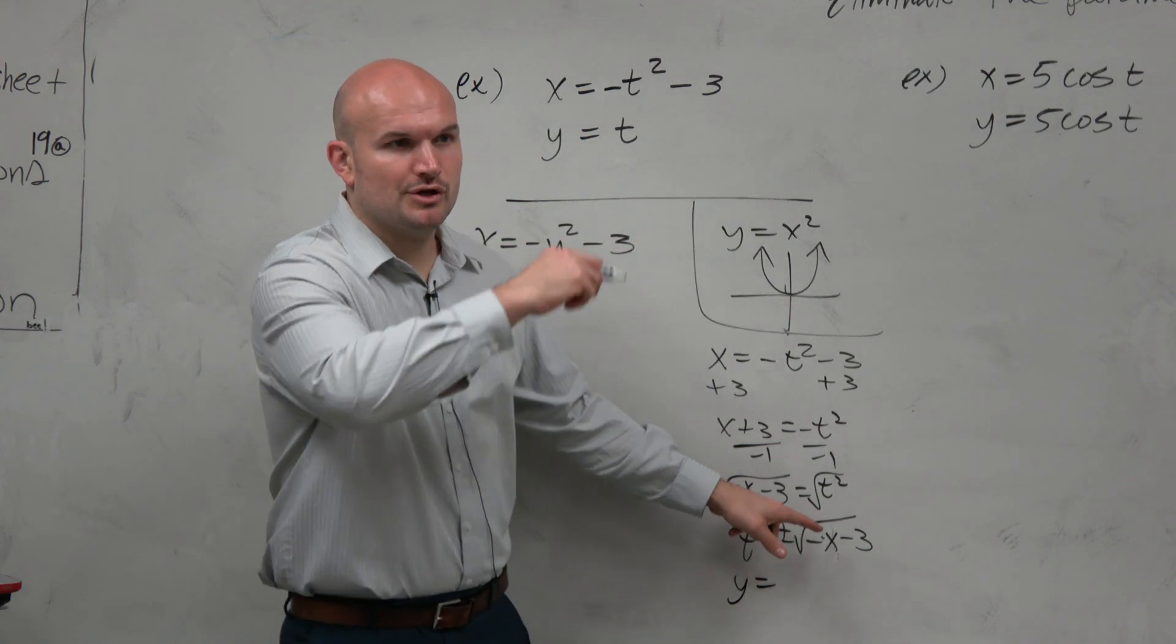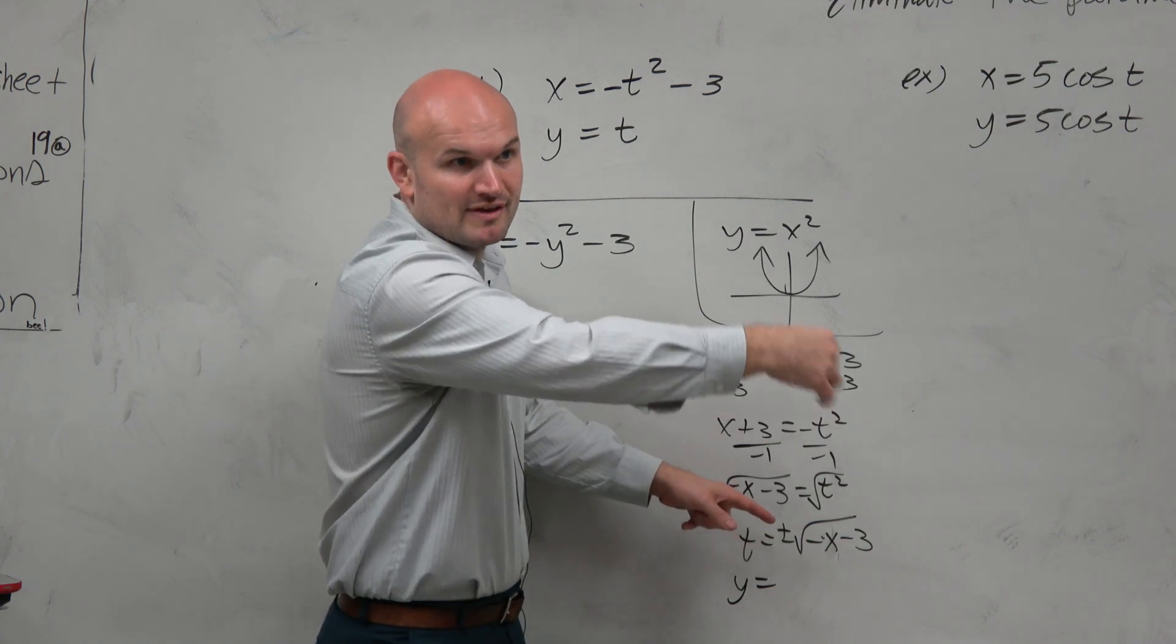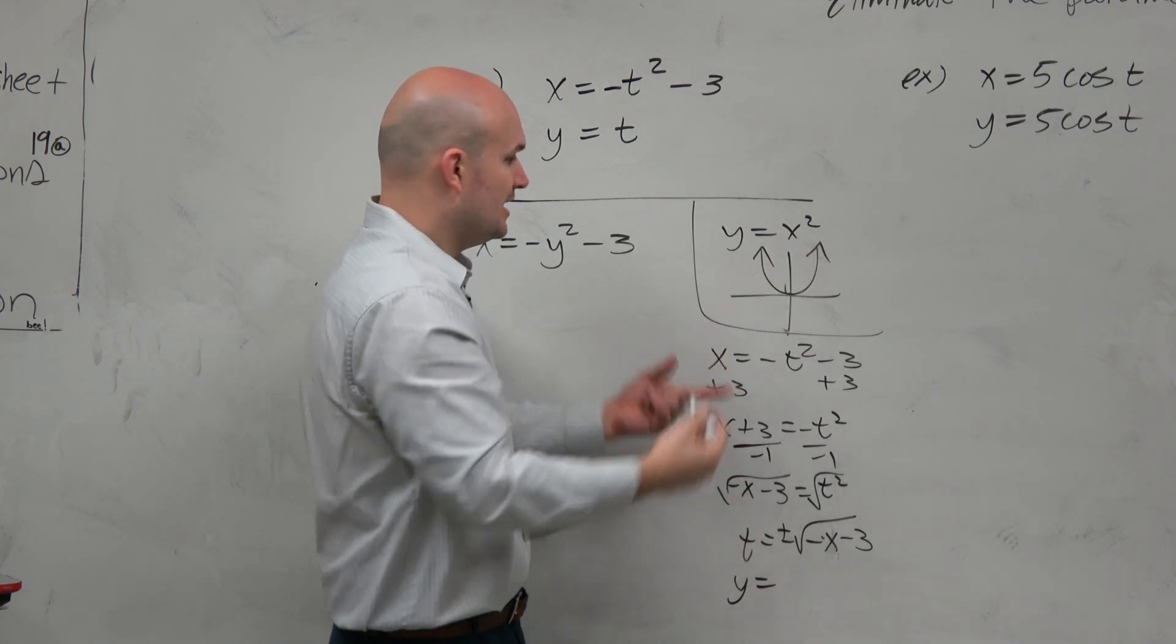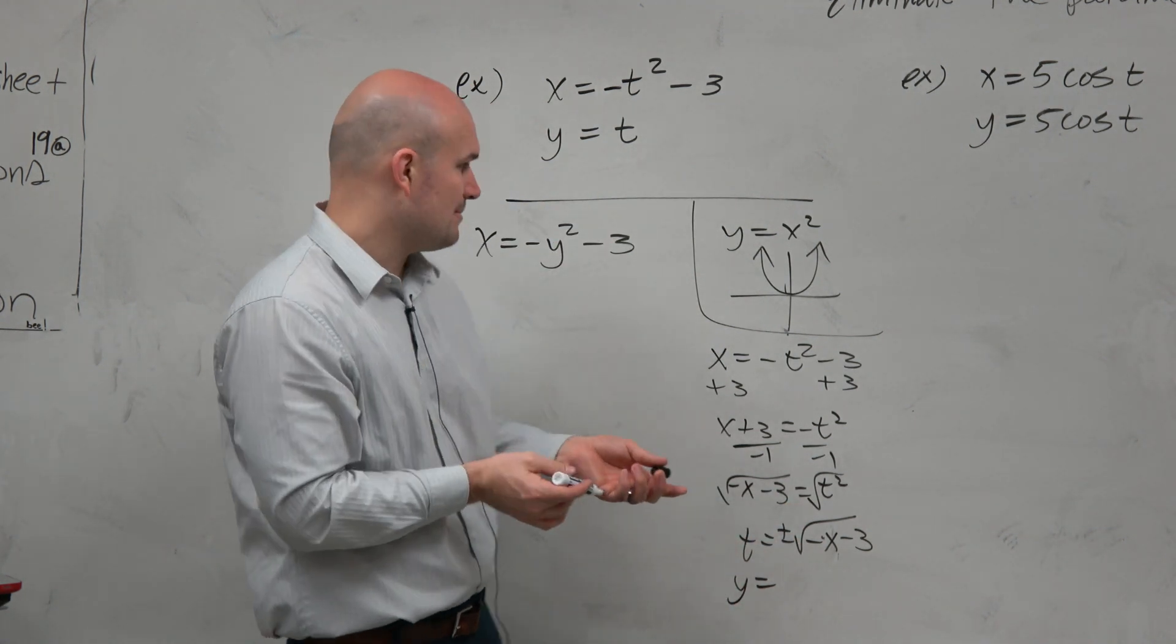Think about the square root curve. If you have a positive square root curve and then a negative reflected square root curve, it would be a sideways parabola. If you type that into your calculator, plus the radical and minus the radical, you would see it creates a sideways parabola.